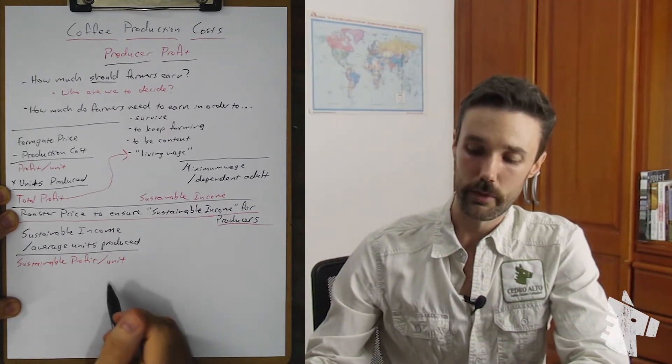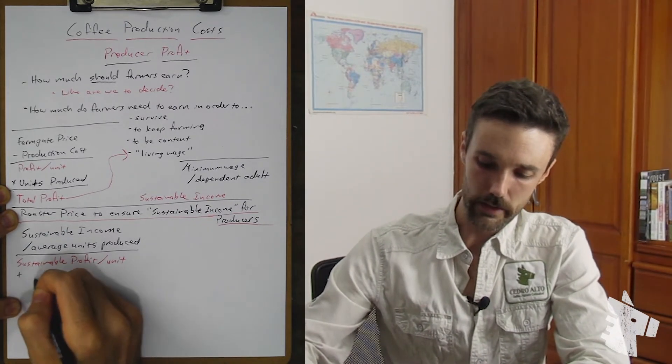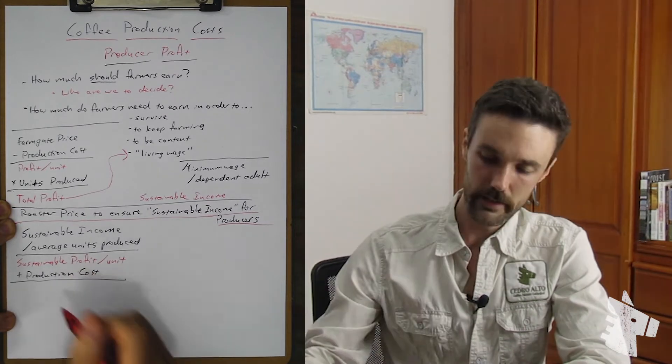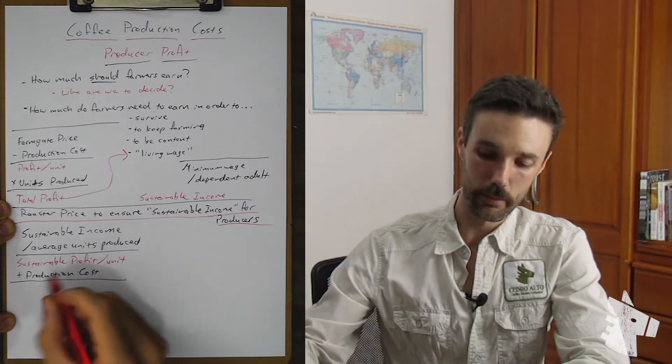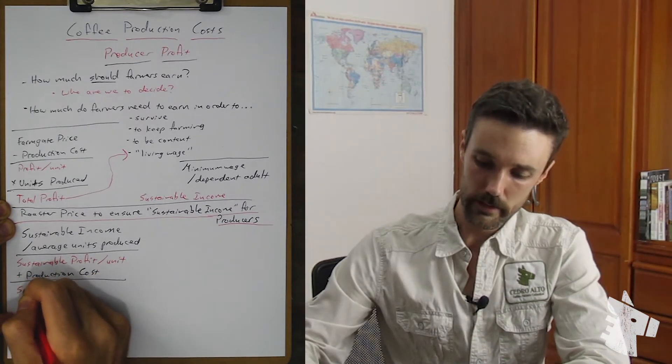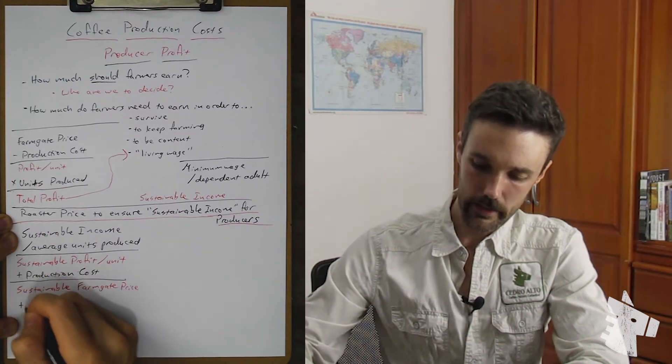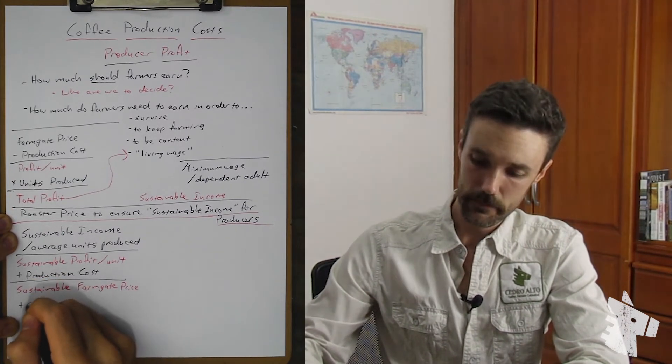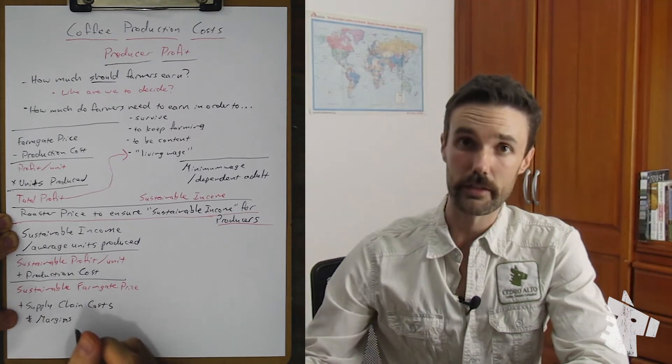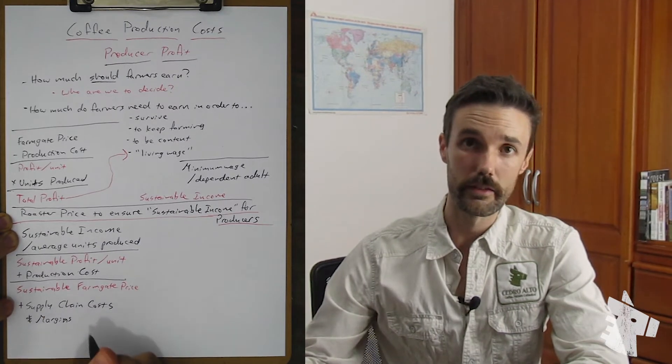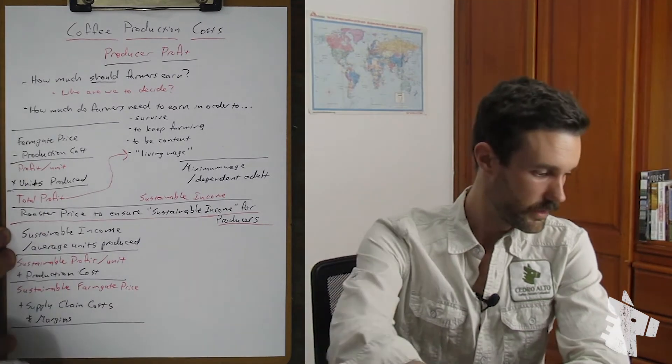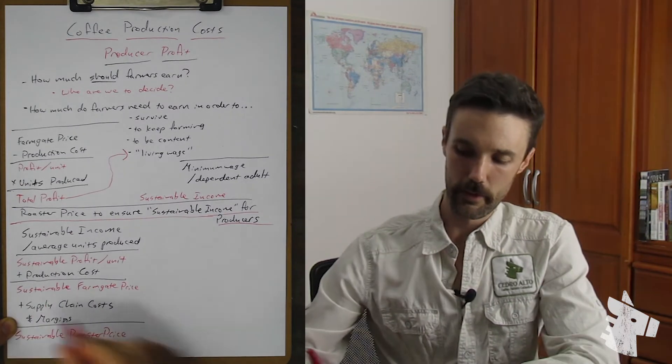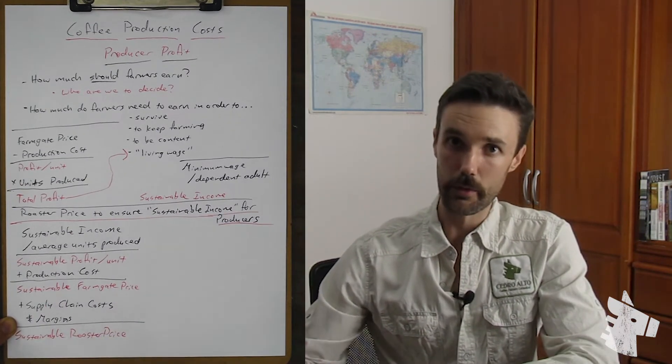To this sustainable profit per unit number, let's add the production cost. This is the amount of money that farmers actually need to bring in. So this would be the sustainable farm gate price. Then adding in supply chain costs and the margins of all of the service providers adding value to this supply chain will give us the sustainable roaster price. Let me rephrase that, the minimum sustainable roaster price.